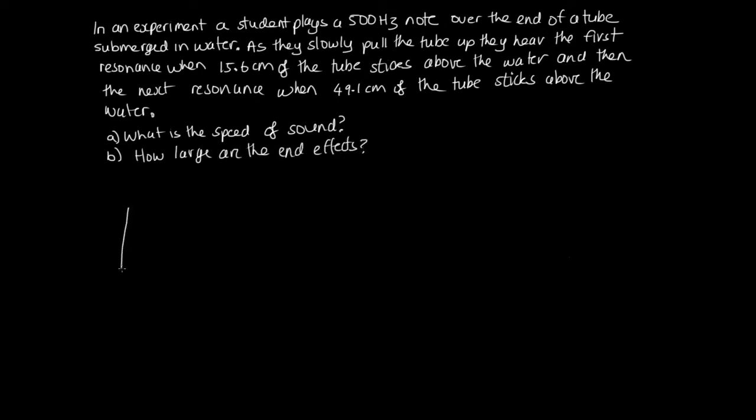Okay, so they're going to hear the first resonance if we've got water here and here's the tube, and we've got a quarter of a wavelength there. So we'll have lambda over 4 is equal to the length of the tube - let's call that L1 plus the end corrections. Let's just refer to the end corrections as E here. And then they continue to pull it up and they hear another resonance at some point like this. And at this point we've got - let's call this L3 - and they've got three quarters of a wavelength there. So 3 lambda over 4 is equal to L3 plus E.